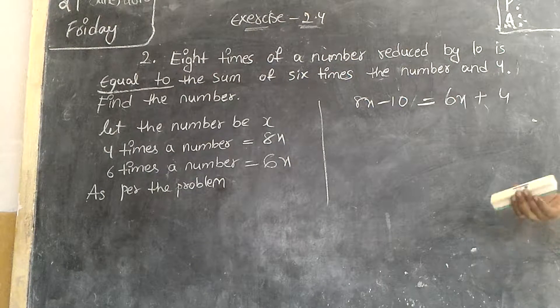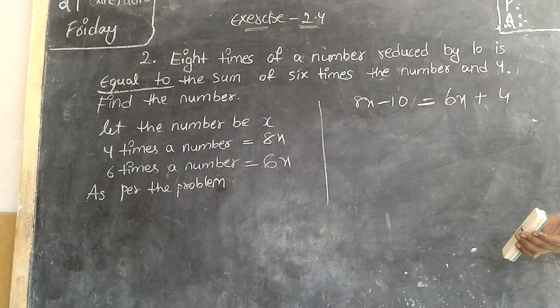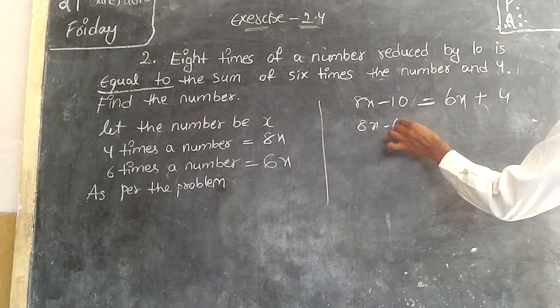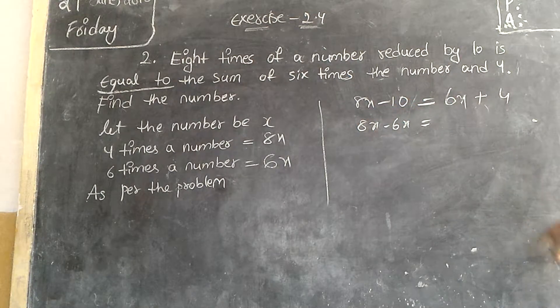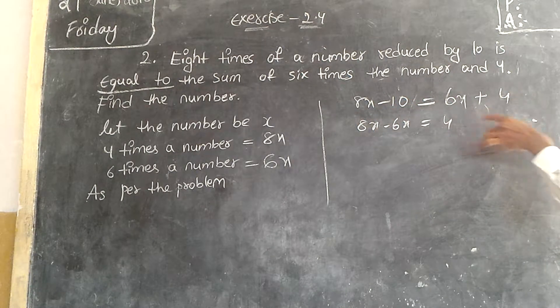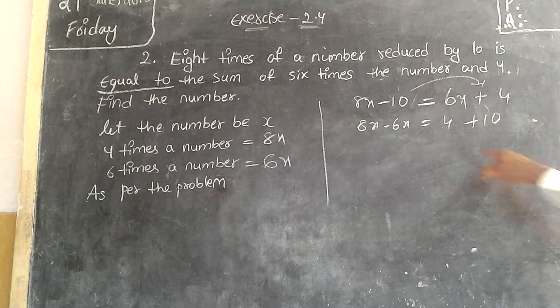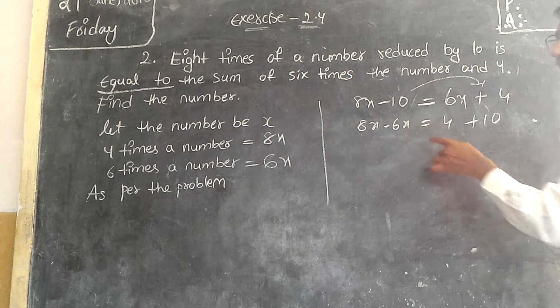Now everybody knows by separating variables and constants we get the answer. Therefore, 8x minus 6x is equal to. This is transposing that side. Here already we have 4. And by transposing this one plus 10.